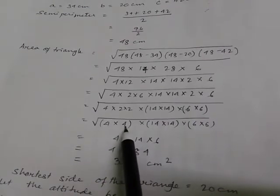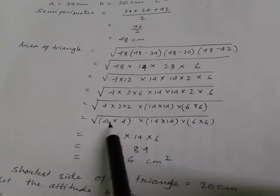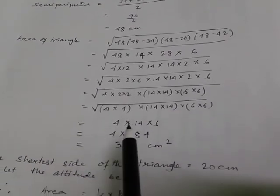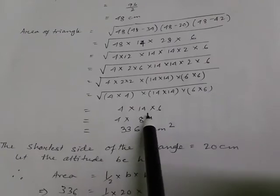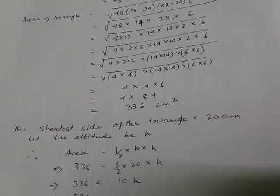Now, 2 into 2 is coming as 4, so I can easily make them as the group. So, from each group, in order to remove the square, it is coming 4 into 14 into 6. So, the answer is 336 centimeter square.